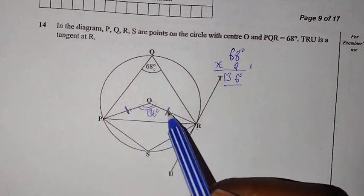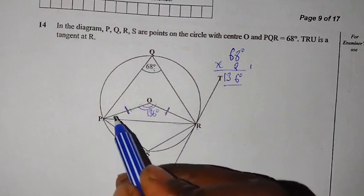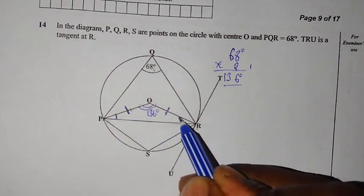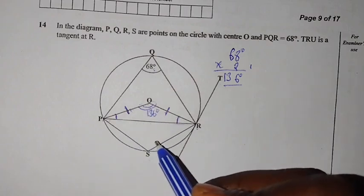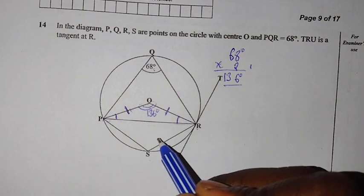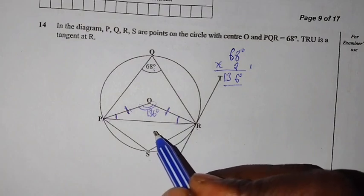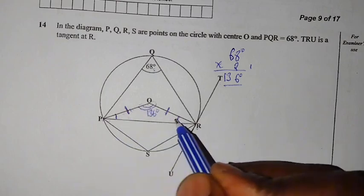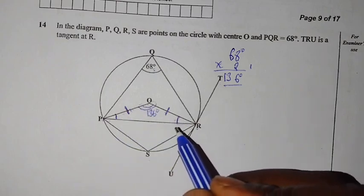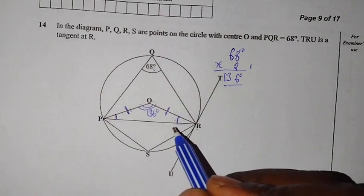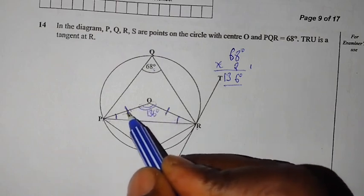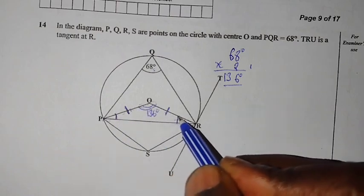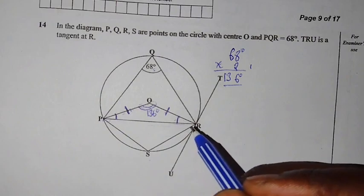Because of these two radii that are equal, meaning that the angle which is here and the angle which is here, they are equal. So we have what we call isosceles triangle. An isosceles triangle has two sides equal and two angles equal. Then we know that the sum of angles in a triangle is equal to 180. So if we add the angle which is here plus the angle which is here and the angle which is here, it should give us 180.